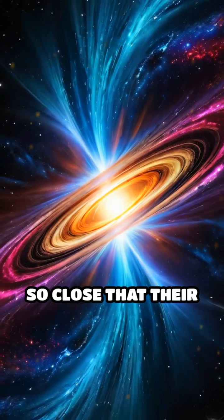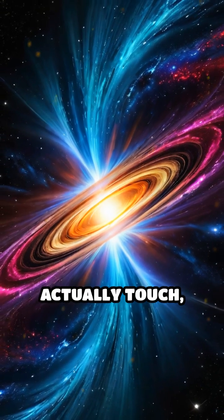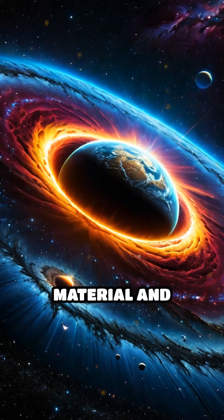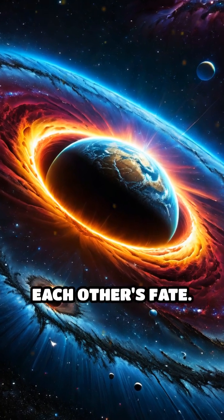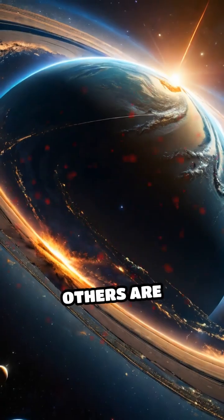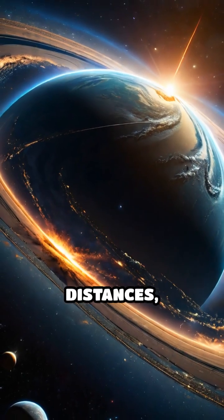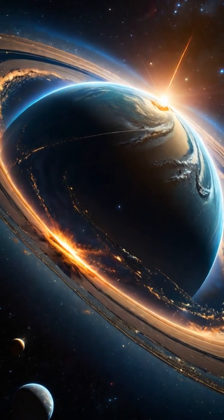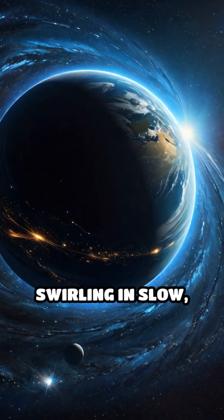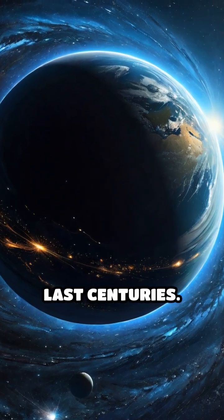Some binaries are so close that their outer layers actually touch, exchanging material and profoundly influencing each other's fate. Others are separated by vast distances, yet remain gravitationally linked, swirling in slow, majestic orbits that can last centuries.